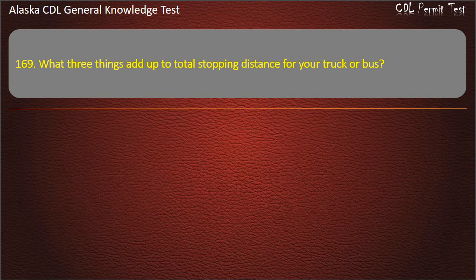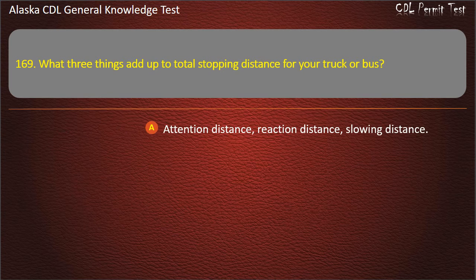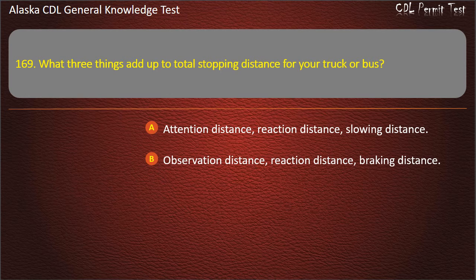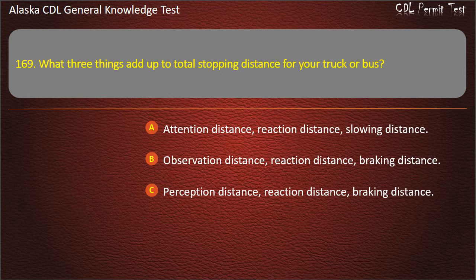Question 169. What 3 things add up to total stopping distance for your truck or bus? Attention distance, reaction distance, slowing distance; observation distance, reaction distance, braking distance; or perception distance, reaction distance, braking distance. Answer: Perception distance, reaction distance, braking distance.